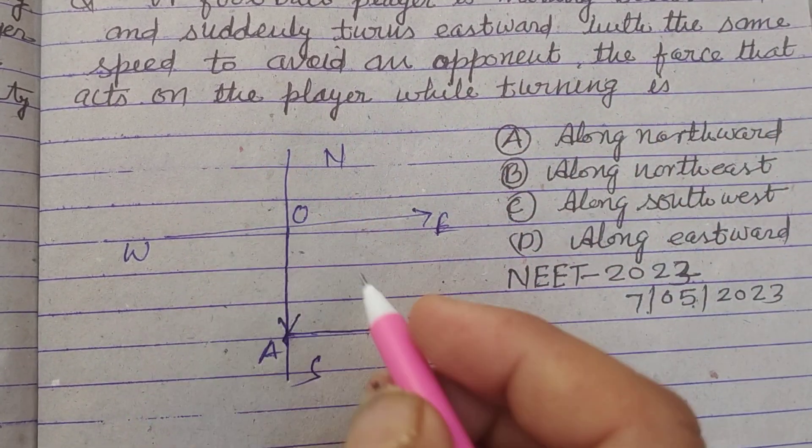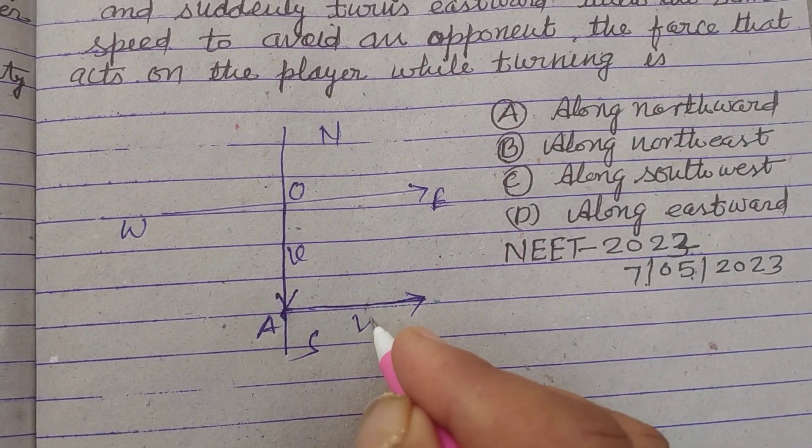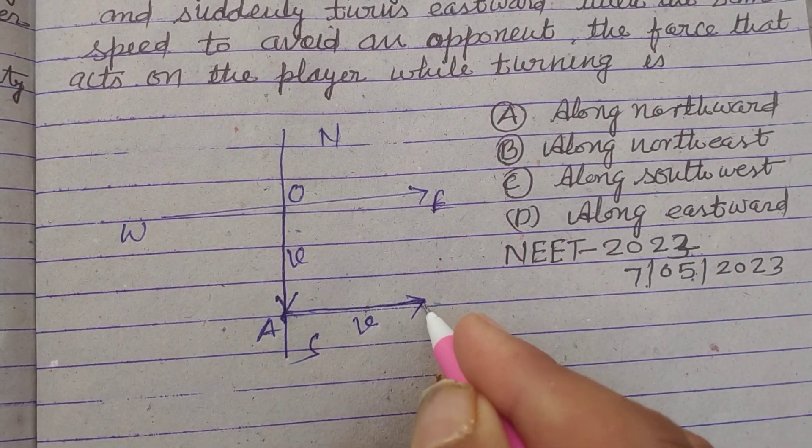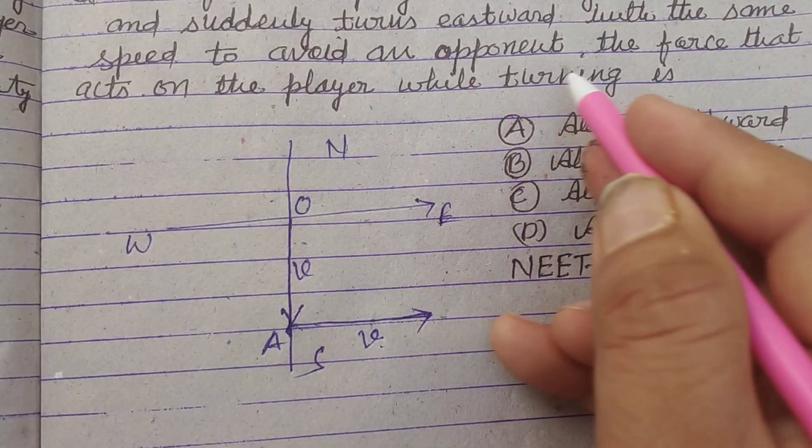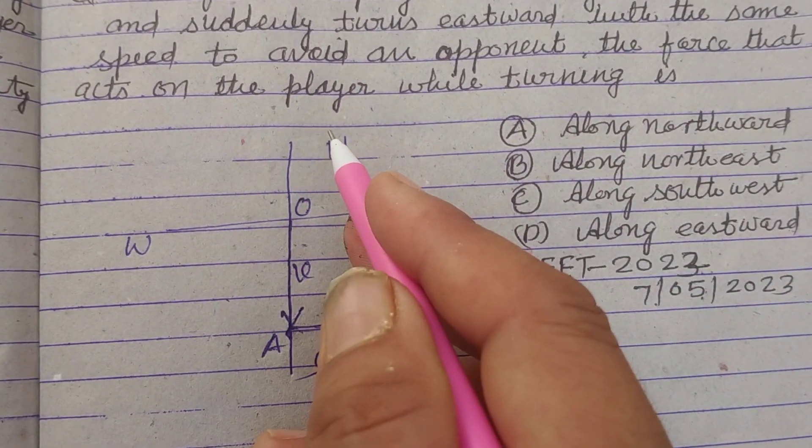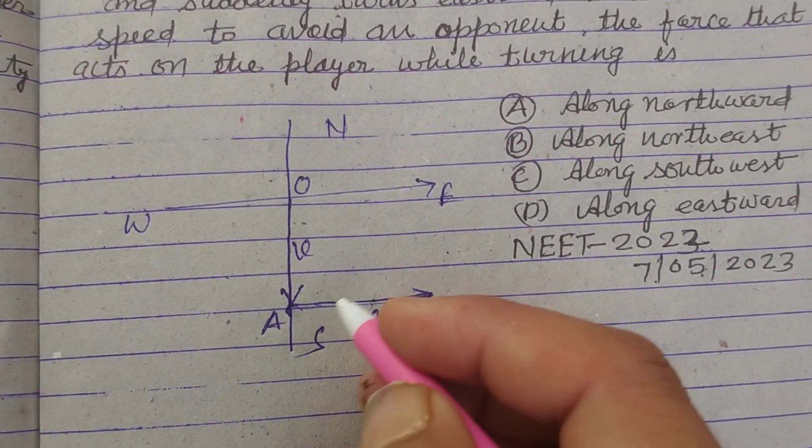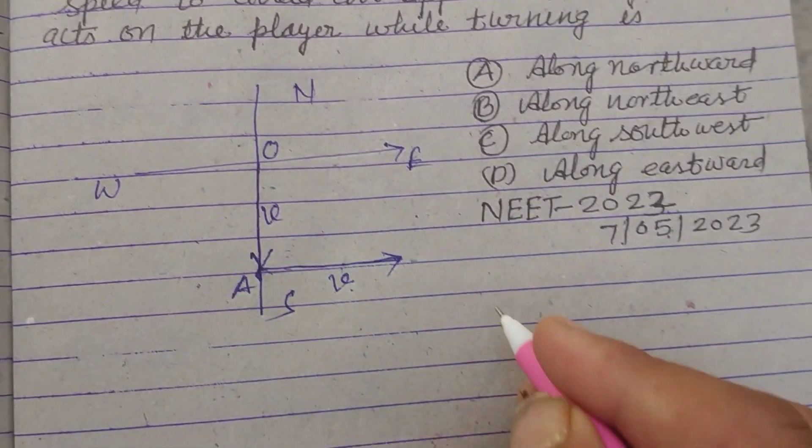With the same speed, here its speed is V and also speed towards east is also V. To avoid the opponent, force that acts on the player while turning. So this is V and V.